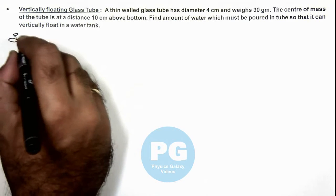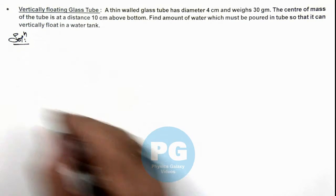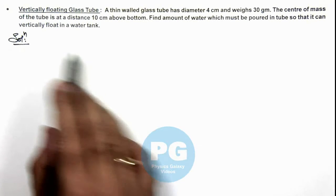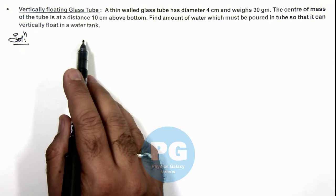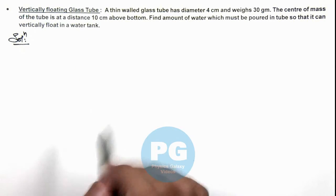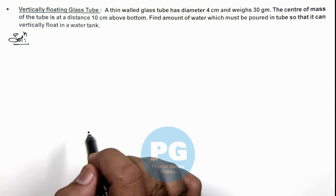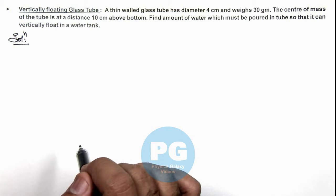Here, in this situation we need to understand. A body can float vertically in water tank only when its center of gravity is below the center of buoyancy in the submerged part of body.